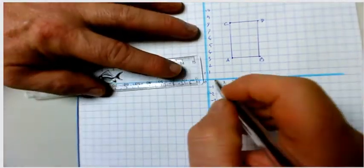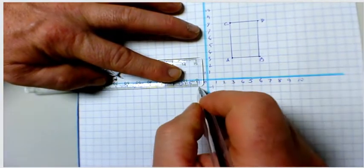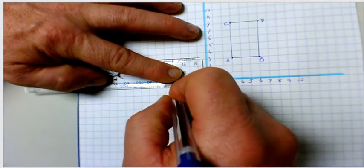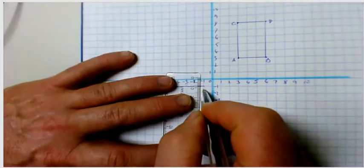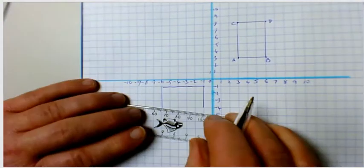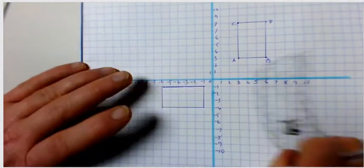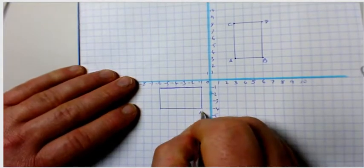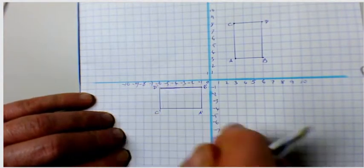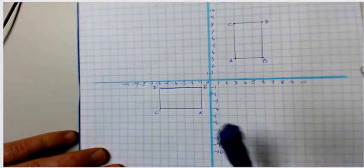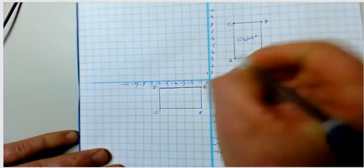We're going to rotate that shape down into this sector here. It's five centimeters long and three centimeters high, so we've got a five by three rectangle. We'll call the rotated shape A dash, B dash, C dash and D dash.